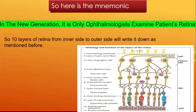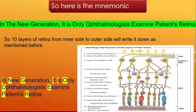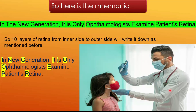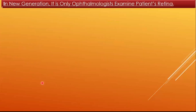Friends, just observe that the first highlighted letters of each word — that is I, N, G, I, I, O, O, E, P, and R — correspond to each of the 10 layers of the retina.